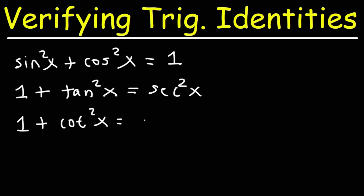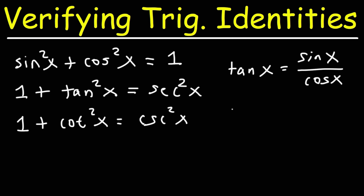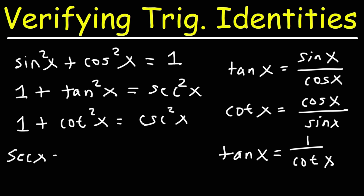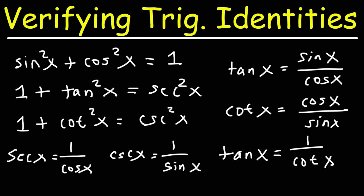The next identity: one plus cotangent squared equals cosecant squared. You also need to know that tangent equals sine over cosine, and cotangent is the reverse — cosine divided by sine — so tangent is the reciprocal of cotangent, or one over cotangent. The reciprocal identities: secant equals one over cosine, and cosecant equals one over sine. Write all this down; it will be very helpful.